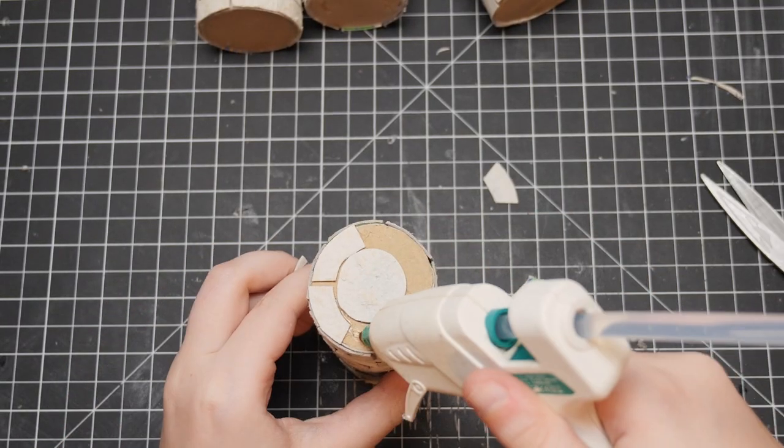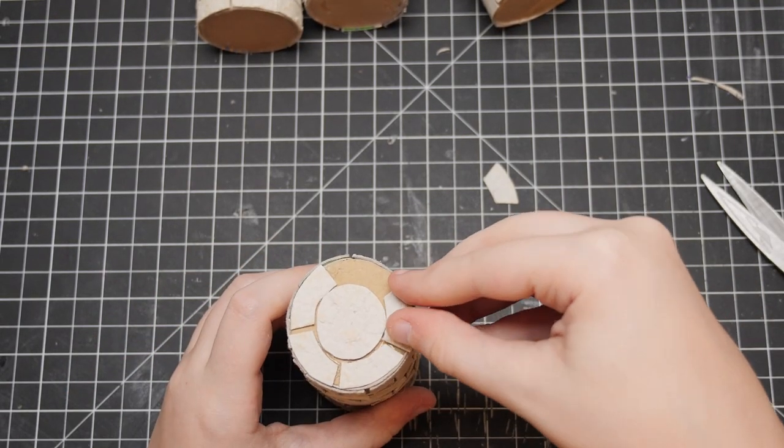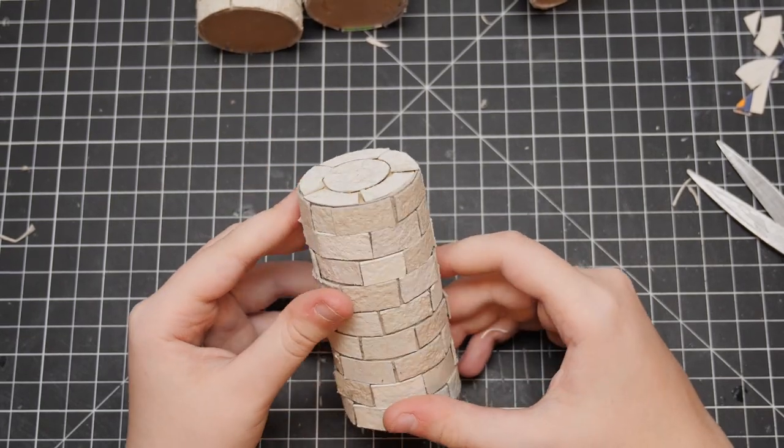Anyways, for the top I just cut a smaller circle out of the egg cartridge and circled it with more bricks.